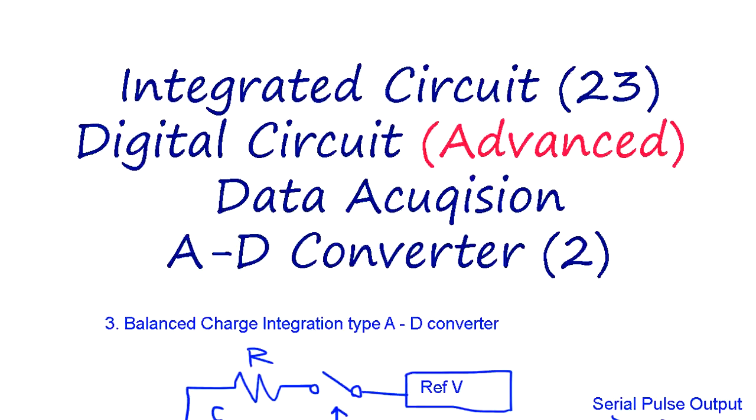Integrated Circuit 23, Digital Circuit Advanced subject, Data Acquisition. This is the second part of the AD converter. We will introduce a few more different types of AD converters.